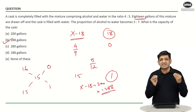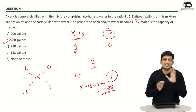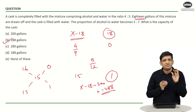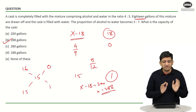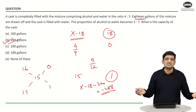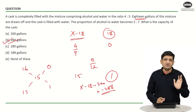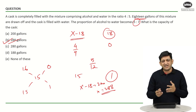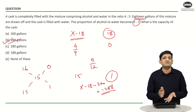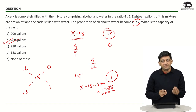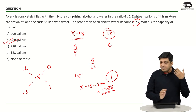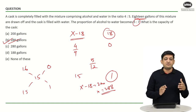You can also solve this very quickly. The cask is completely filled with water and alcohol in the ratio 4:5, which is 9 parts total. Whatever amount is present must be divisible by 9. Which option is divisible by 9? 288. That is the answer. Similarly, the final ratio is 5:7, which is 12 parts — which option is divisible by 12? 288. Whereas the rest of the options are not divisible by 9 or 12. So 288 is something you can safely mark even with very little time on hand.